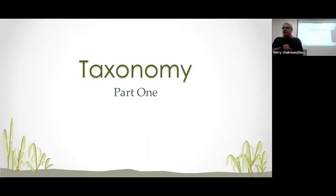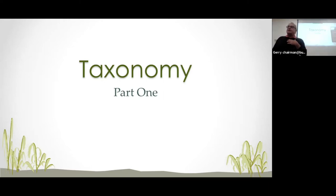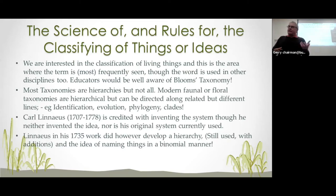I'm actually going to talk about Linnaeus tonight. A lot of you will know quite a lot about Linnaeus, so you probably won't learn anything tonight — although I doubt that, because I actually learned a bit on the weekend. Okay, so welcome to my talk: Taxonomy Part 1. Taxonomy is the science of and rules for the classifying of things or ideas. We tend to use taxonomy mainly in the living sciences, but there are taxonomies in a whole host of other things.